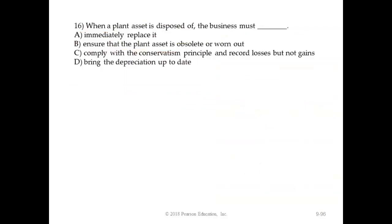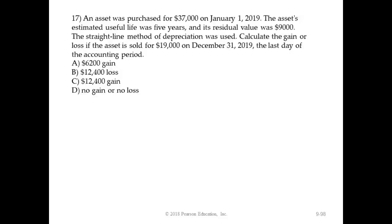Question 16: when a plant asset is disposed of, the business must — A, immediately replace it; B, ensure the plant asset is obsolete or worn out; C, comply with the conservatism principle and record losses but not gains; or D, bring depreciation up to date. The correct answer is D. We bring depreciation up to date because we need that updated depreciation expense amount to accurately reflect accumulated depreciation and get the book value correct as of the date of disposal.